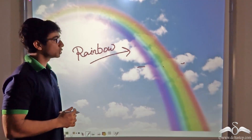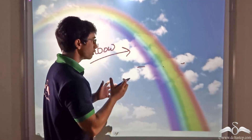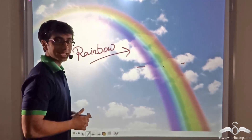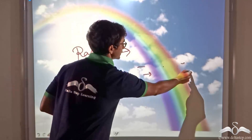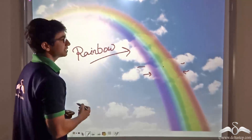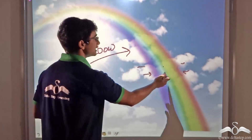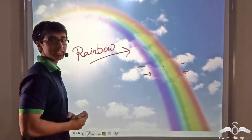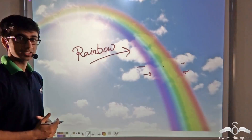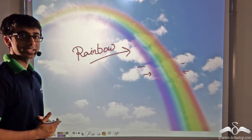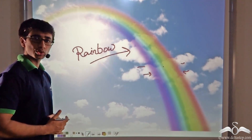You will be interested to learn that nature is able to break this white light into its respective constituents — that is violet, indigo, blue, green, yellow, orange, and red, known as VIBGYOR. Now if nature can split white light into its seven constituents, can we humans do so?